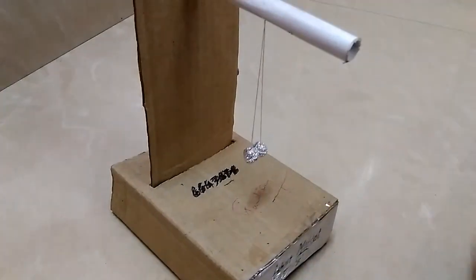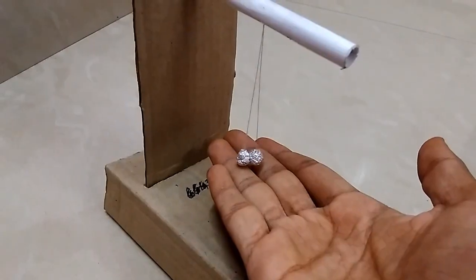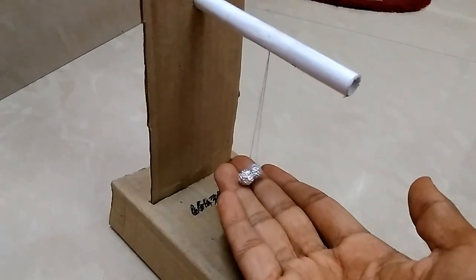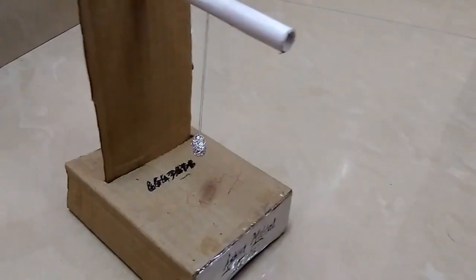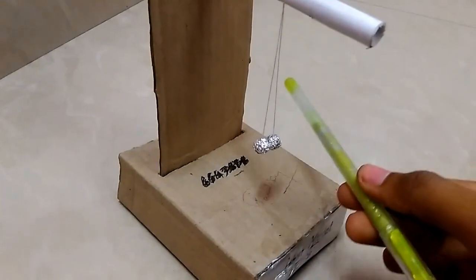And to neutralize the balls, you can touch it with your hand or palm. This will neutralize the overall charge in the balls. And when we charge again the rod and bring near it, it will attract.